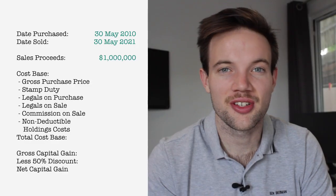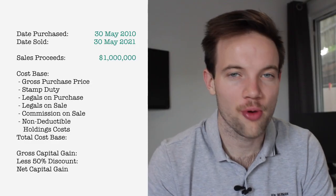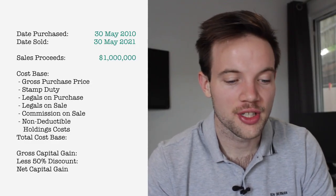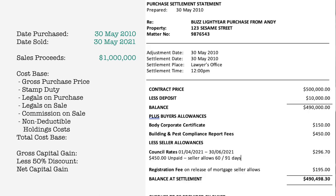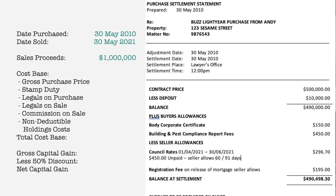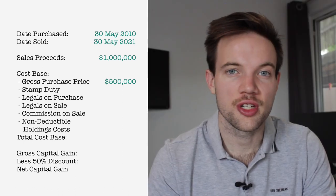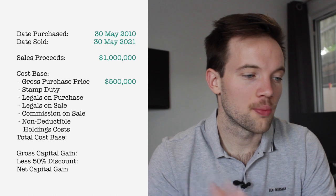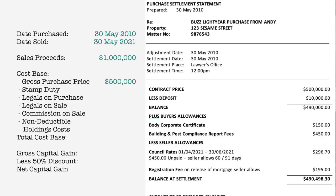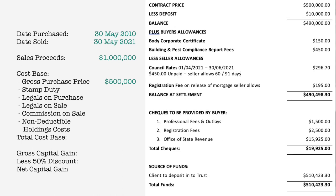Next we need to consider the cost base of the property. The first item is the gross purchase price — looking at the purchase settlement statement, in our example that's $500,000. Next is transfer duty, also known as stamp duty. Looking at the purchase settlement statement towards the bottom half, that's the office of state revenue line, equalling $15,925.